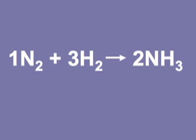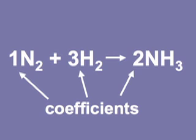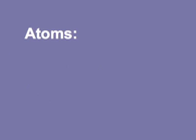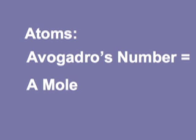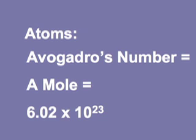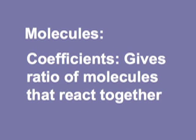Here's the equation we're going to use today: nitrogen plus hydrogen yields ammonia. The 1, the 3, and the 2 are the coefficients that balance the equation. To measure atoms you use Avogadro's number, which is 6.02 × 10²³. A mole of any substance is that many atoms. Remember — Avogadro's number, a mole, 6.02 × 10²³, is just like a dozen. It's that many of anything.